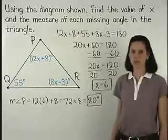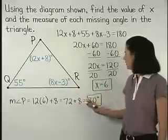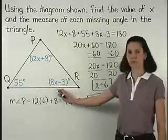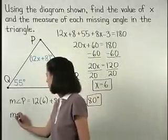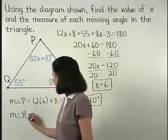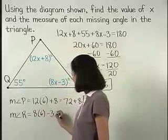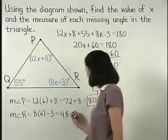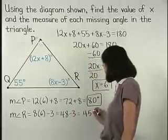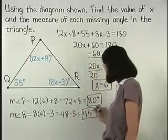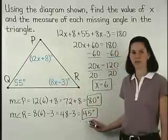Remember that the measure of angle R is 8x minus 3. So if we plug a 6 in for x, then for the measure of angle R, we have 8 times 6 minus 3, which is 48 minus 3, or 45 degrees. So the measure of angle R is 45 degrees.